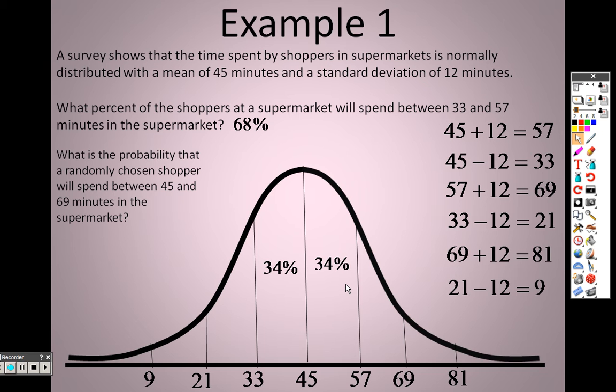What is the probability that a randomly chosen shopper will spend between 45 minutes and 69 minutes? Well, we bracketed that off so you know what the percentages are. In 45, this section right here, this one standard deviation is 34, and this one down here is 13.5, so you add those two together to end up with 47.5%. Basically, that's as simple as this stuff is, filling it in.